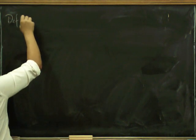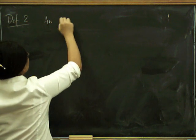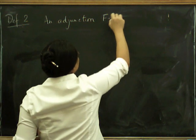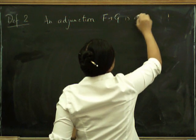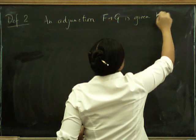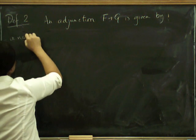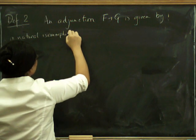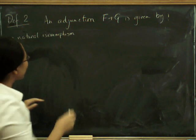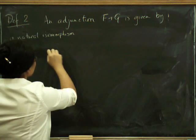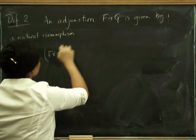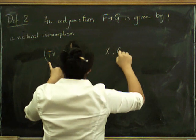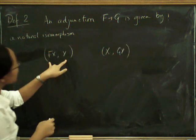Here's a different definition, definition 2. An adjunction with F left adjoint to G is given as follows: it's given by a natural isomorphism from morphisms from F of X to Y to morphisms from X to G of Y.